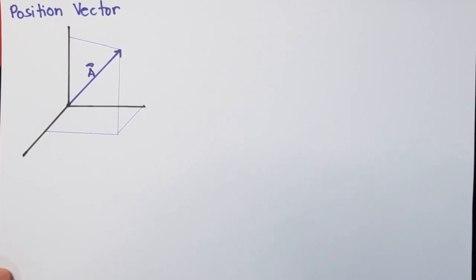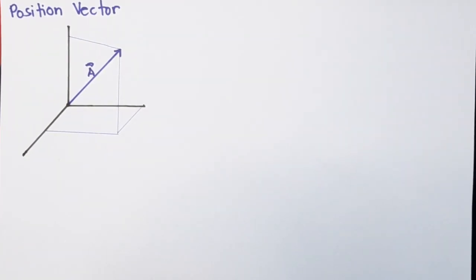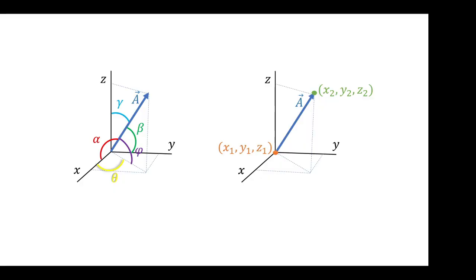Good day everyone. Today we will discuss position vectors. From our previous discussion, we solved Cartesian vectors using given angles — either the direction angles or the transverse and azimuth angle. Now we will proceed to determining Cartesian vectors using position vectors.